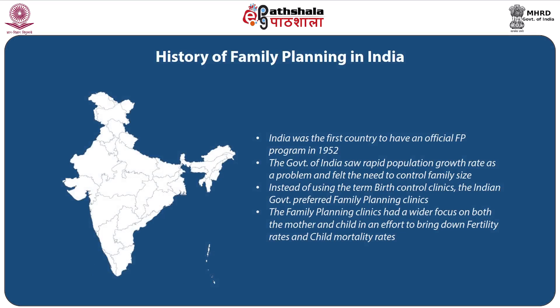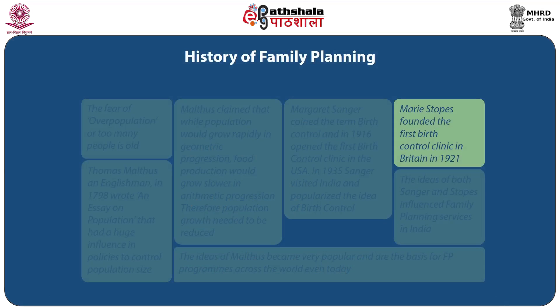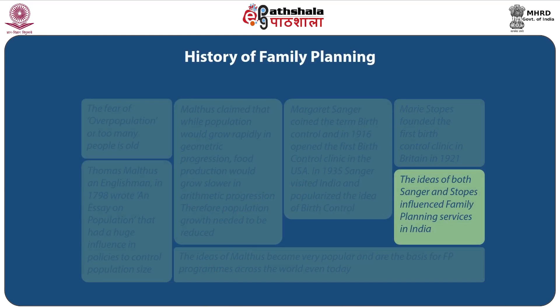India was the first country to have an official family planning program in 1952. The government of India saw rapid population growth rate as a problem and felt the need to control family size. Instead of using the term birth control clinics, the Indian government preferred family planning clinics, which had a wider focus on both the mother and child in an effort to bring down fertility rates and child mortality rates. Marie Stopes founded the first birth control clinic in Britain in 1921, and the ideas of both Sanger and Stopes influenced family planning services in India.